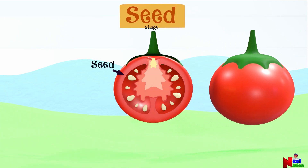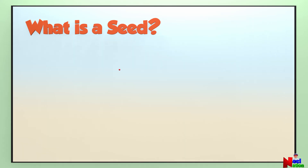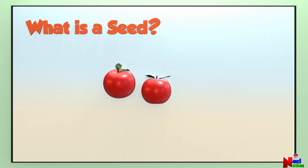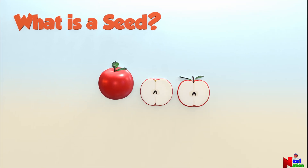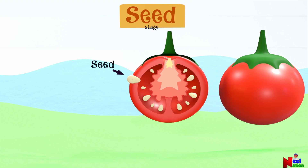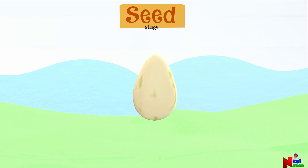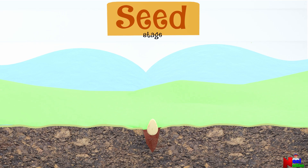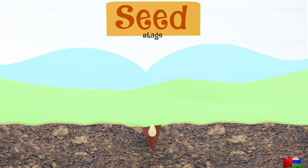A seed is a part of a plant that can grow into a new plant. Seeds are usually found inside fruits like apples or oranges, or hiding in the ground. Inside a seed there is a special mix of everything a plant needs to grow. The seed waits for the right conditions to start its magical journey — like a tiny superhero getting ready for an incredible adventure.